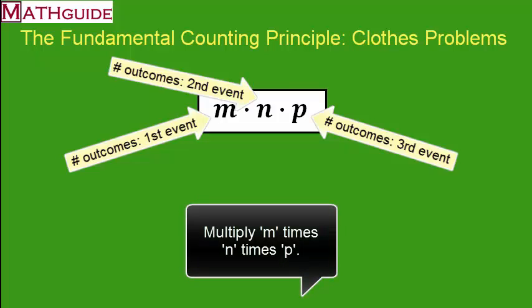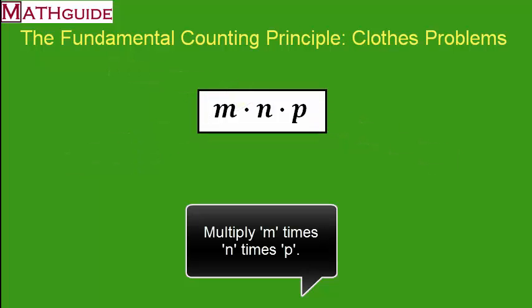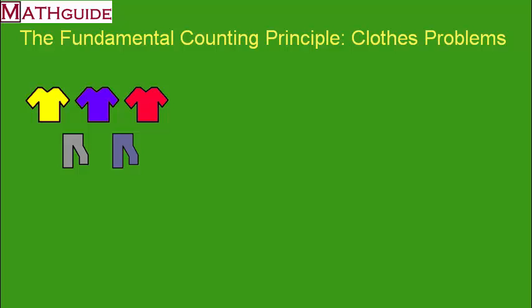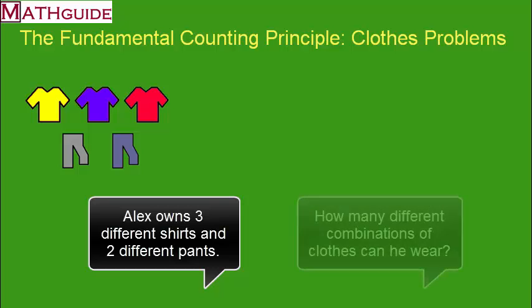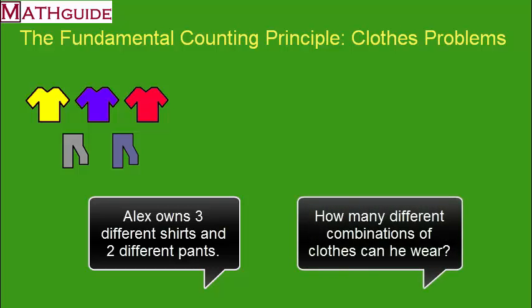All right, we're going to take a look at three problems that demonstrate how to use this principle. All right, here's problem number one. Let's say we had a friend Alex and Alex had this setup of clothes. He's got three different shirts, two different pants. Alex wants to know how many different combinations of clothes can he wear and never quite have the same outfit on and see how many different days he could go with different clothes.